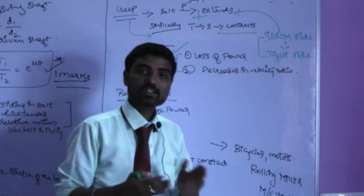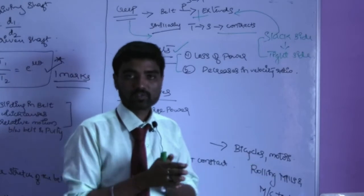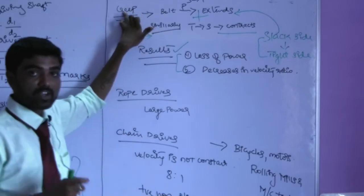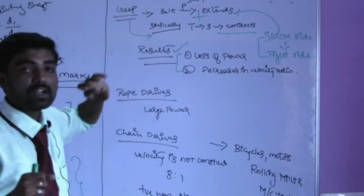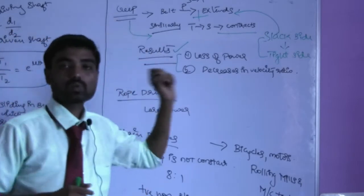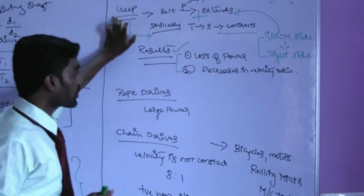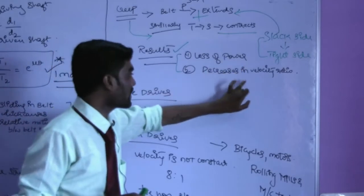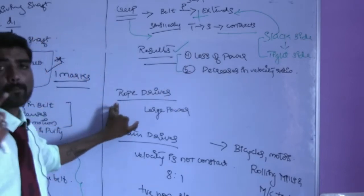The definition of creep: contraction of the belt and extension of the belt which causes relative motion — hence it is called creep. The result of creep is loss of power and decrease in the velocity ratio. These are very important points.